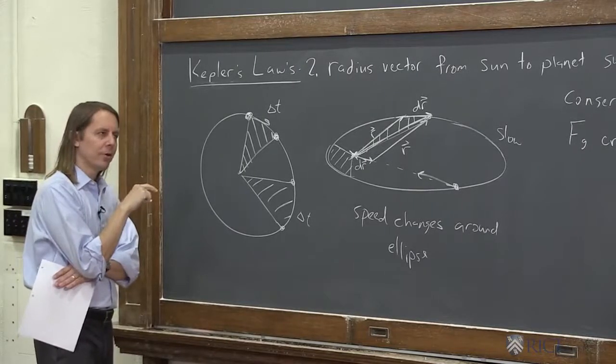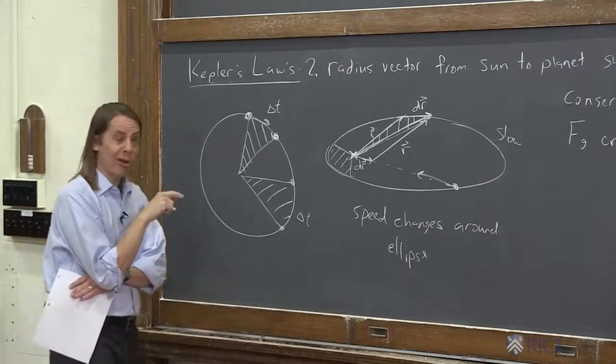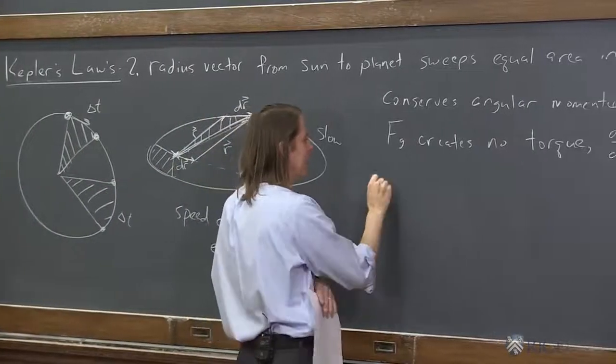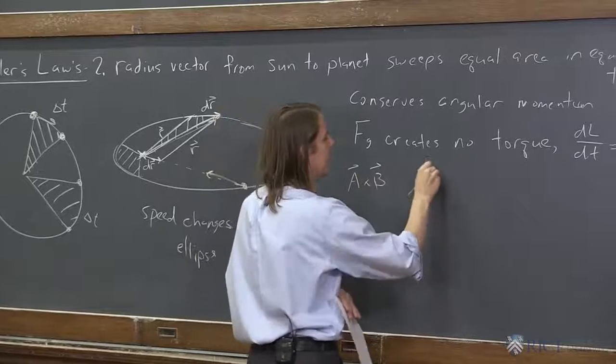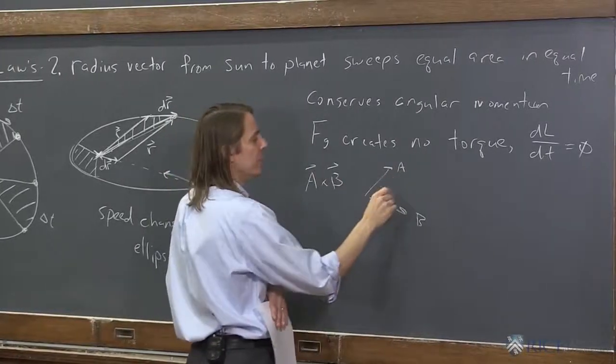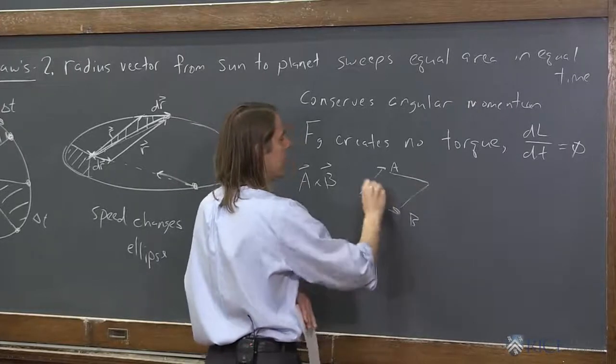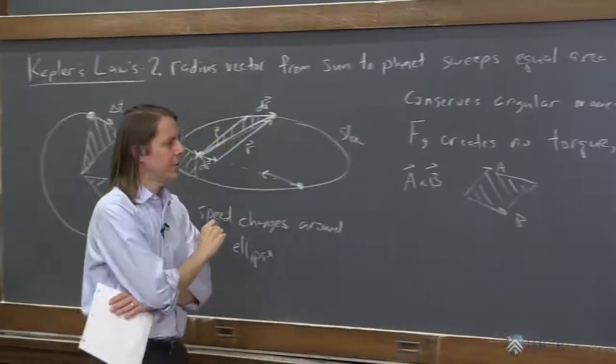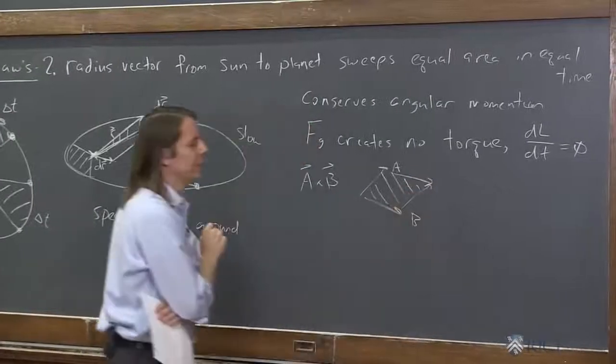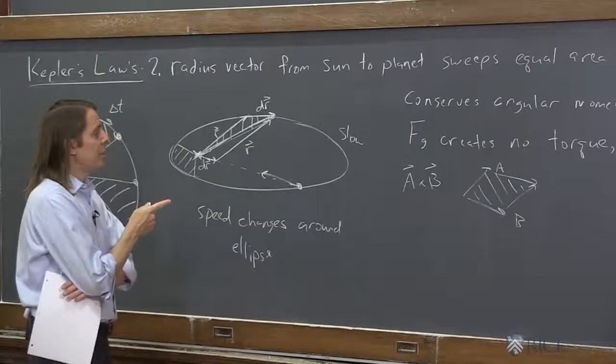And it turns out cross products are the area of a parallelogram. We've never, in this class, talked about the geometrical interpretation. But if you have a cross b, and there's a, and there's b, the magnitude is actually equal to the area of that parallelogram. If you draw b again here, and a again there.